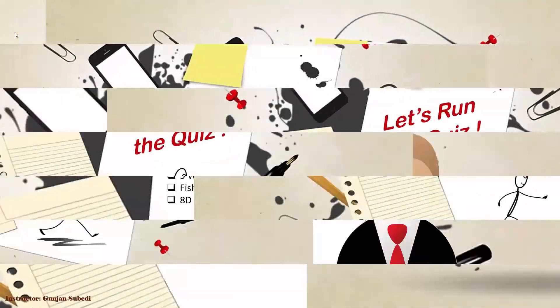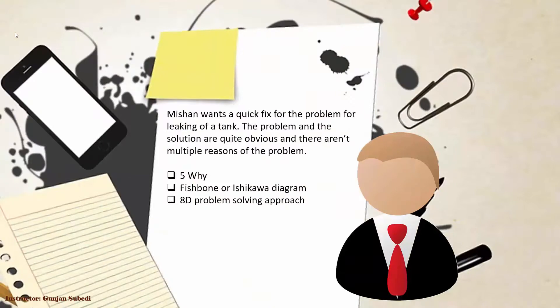Mission wants a quick fix for the problem of leaking of a tank. The problem and solutions are quite obvious. There aren't multiple reasons that Mission can find. Which of the following root cause analysis approaches can Mission use to identify the root causes of that problem? Your options are 5-Why, Fishbone or Ishikawa diagram, and a deep problem solving approach. I'll give you some time to think. So you can pause the video now.